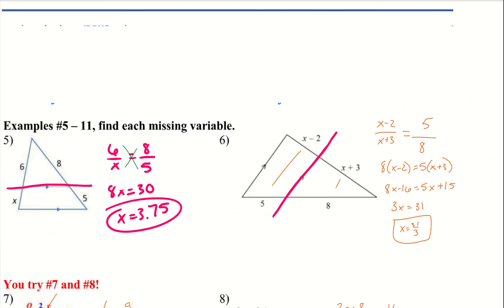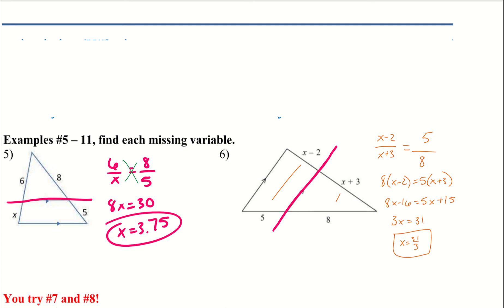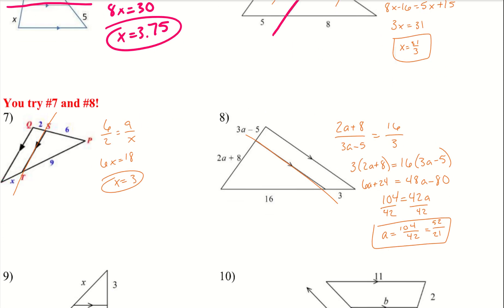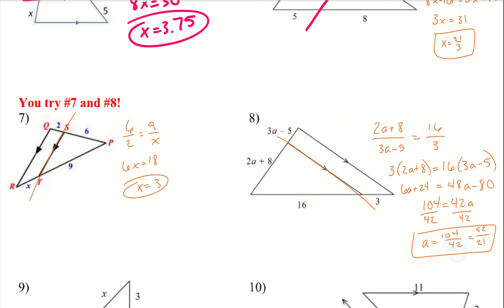Go ahead and try examples 7 and 8, doing the same process — draw that line across the middle parallel line and you've created those two fractions. Alright, let's go ahead and take a look at 7 and 8. There are the solutions. I draw that line down the center and then I have those two fractions set up.